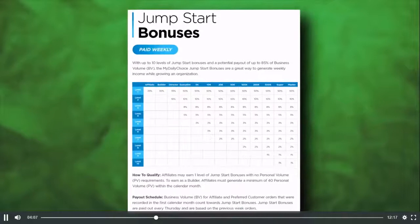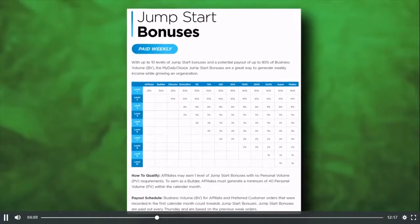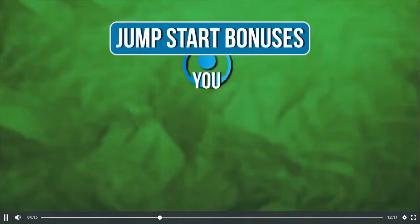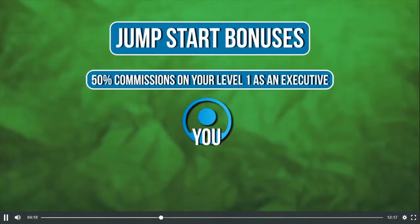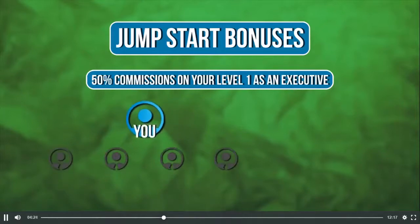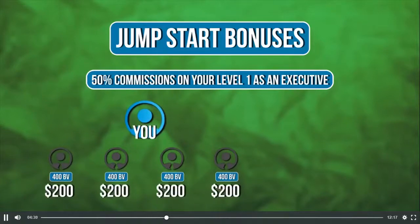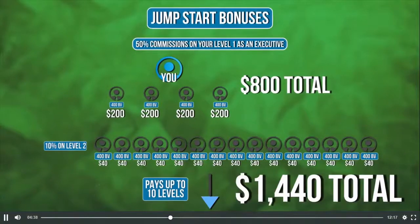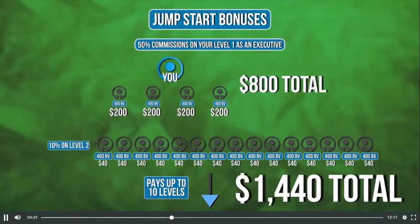You can earn up to 10 levels of jumpstart bonuses. These bonuses are based on the first month product orders from your preferred customers and affiliates. As an example, if you are qualified as an executive, you get paid 50% of the business volume on your personal referrals. If you enrolled four people who ordered 400 BV worth of products, you would get paid a $200 commission per person, totaling $800. If your personals also referred four, you'd get paid 10% of the business volume for level two and so on. Jumpstart bonuses pay weekly.